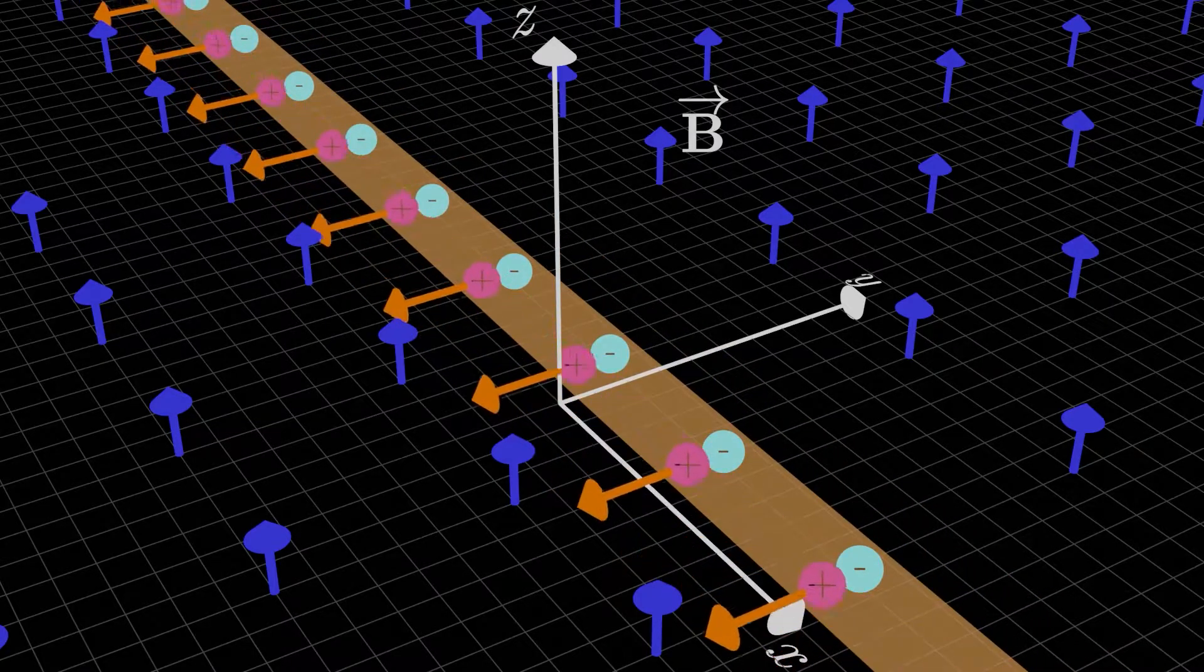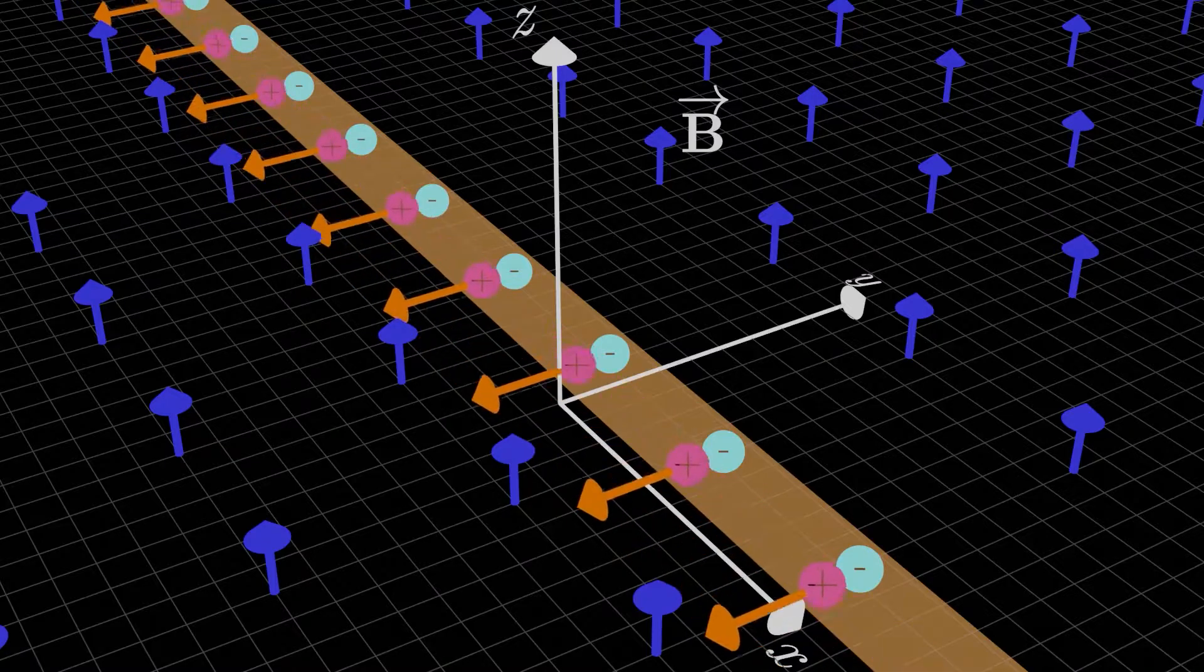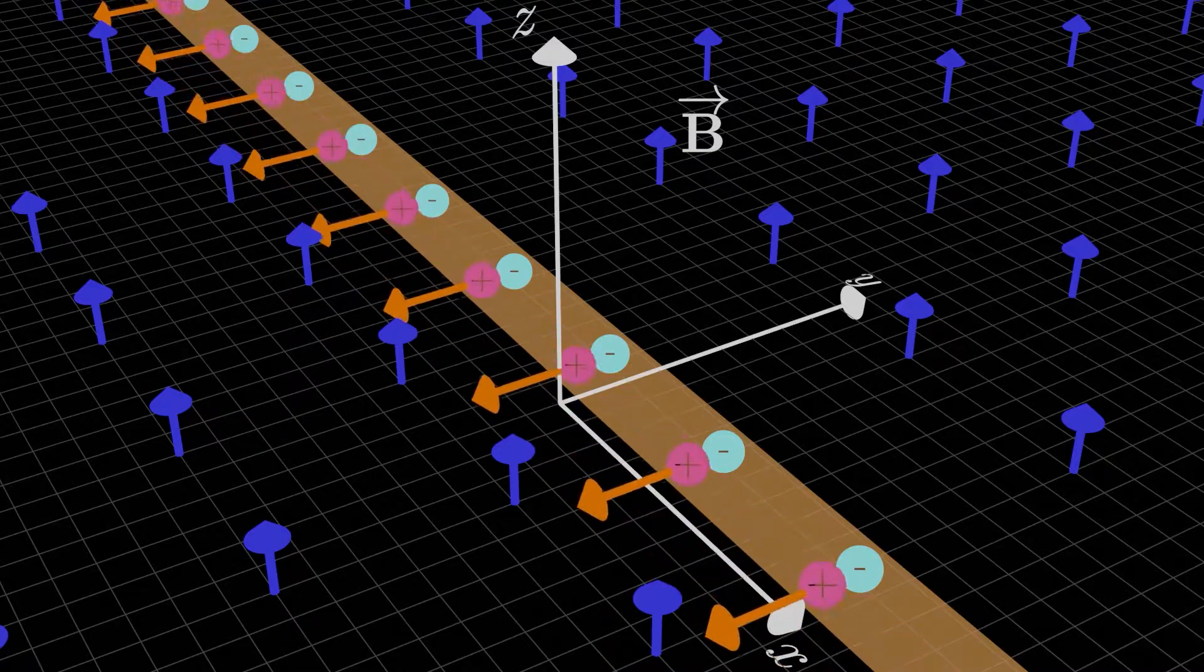The reason is those mini-forces that the charges all feel are passed on to the wire itself, since the charges are trapped inside. This probably seems like a reasonable model for a long, thin wire, and it is.